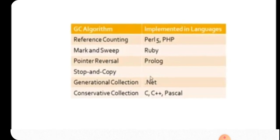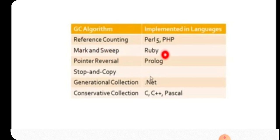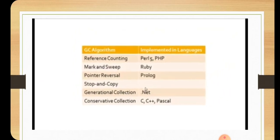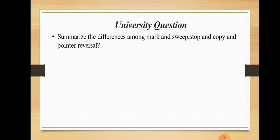To summarize the garbage collection algorithms: reference counting, then mark-and-sweep, then pointer reversal, stop-and-copy, generational collection, and conservative collection. Reference counting is implemented in Perl and PHP, mark-and-sweep is used in Ruby, and pointer reversal is used in Prolog. A university exam question from KTU asks: summarize the differences among mark-and-sweep, stop-and-copy, and pointer reversal technique.